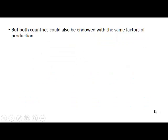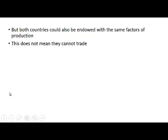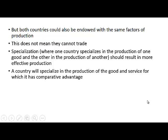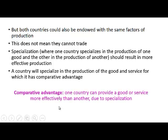But both countries can also be endowed with the same factors of production — this does not mean that they cannot trade. Specialization, where one country specializes in the production of one good and the other in another, should result in more effective production. A country will specialize in the goods and services for which it has comparative advantage. Comparative advantage means one country can provide a good or service more effectively than another, due to specialization.